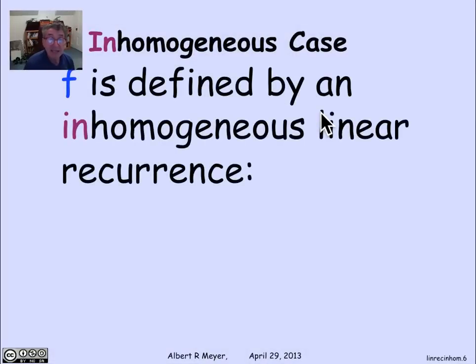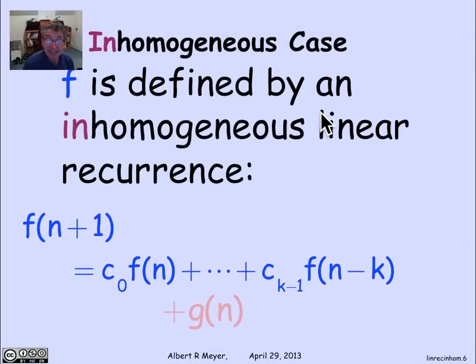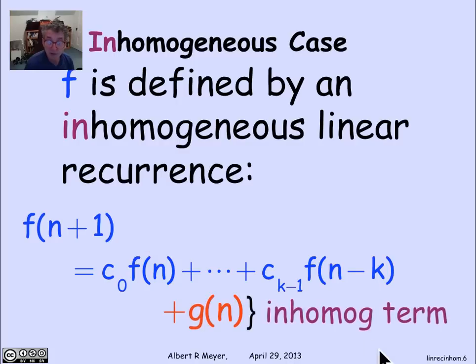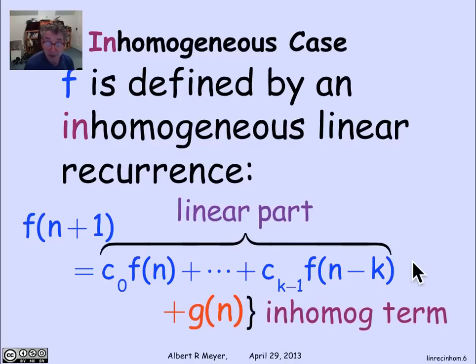Inhomogeneous just means that there's something tacked on to the linear recurrence part. There's an extra term called g of n that gets added in when you're computing f of n plus 1, and that's called the inhomogeneous term. Of course, the rest is called the linear part. So let's now look at an example, again, a little story that leads us to a natural inhomogeneous linear recurrence, and then we will talk about how to deal with it.